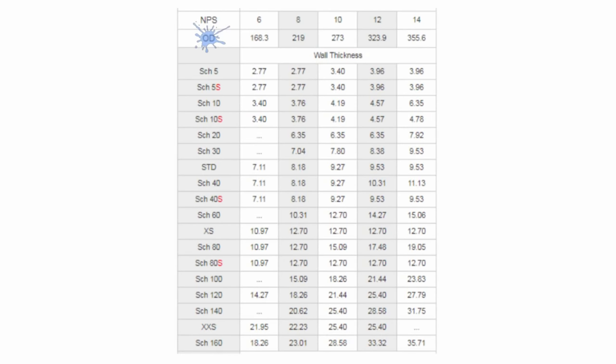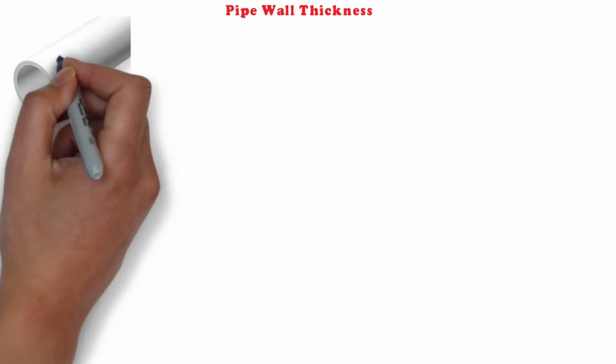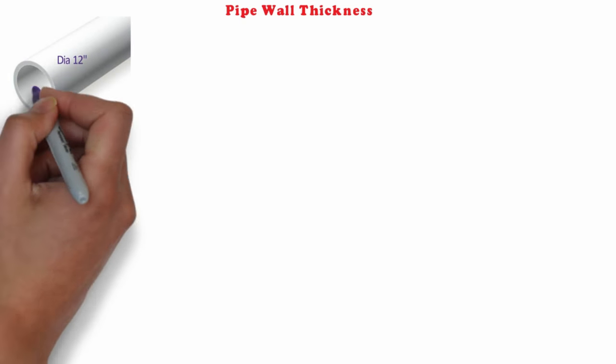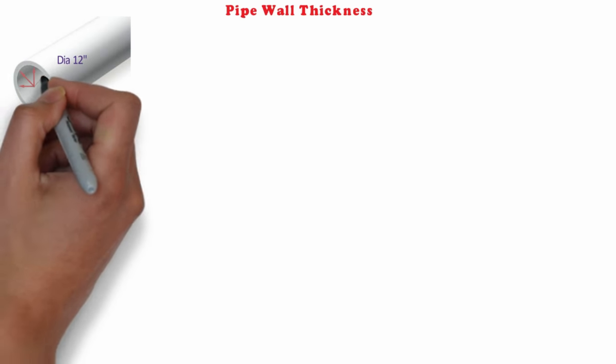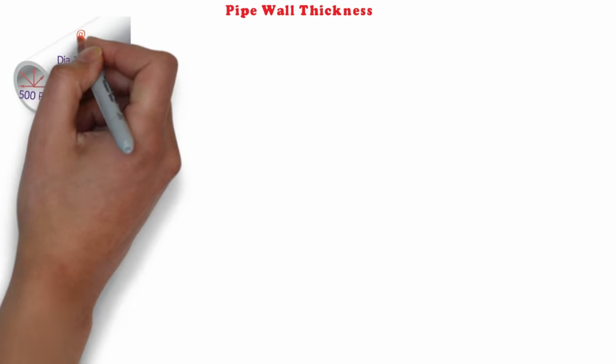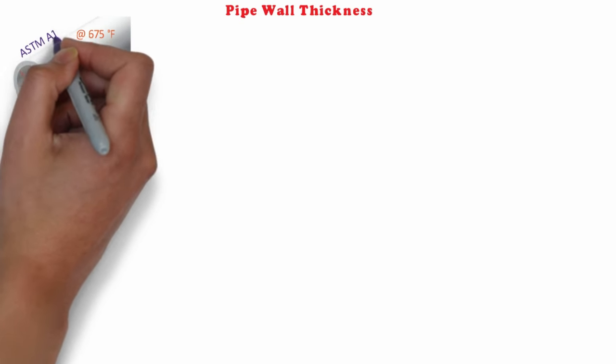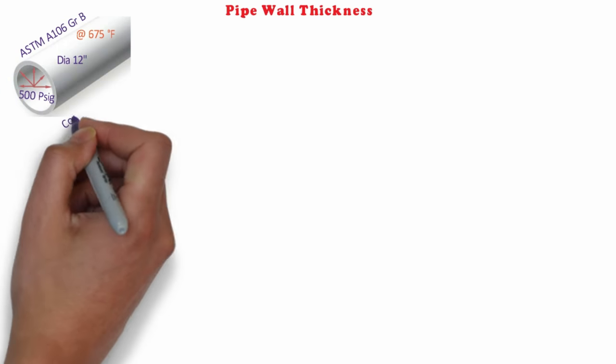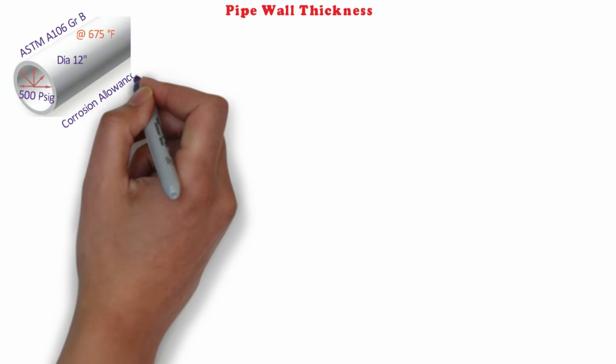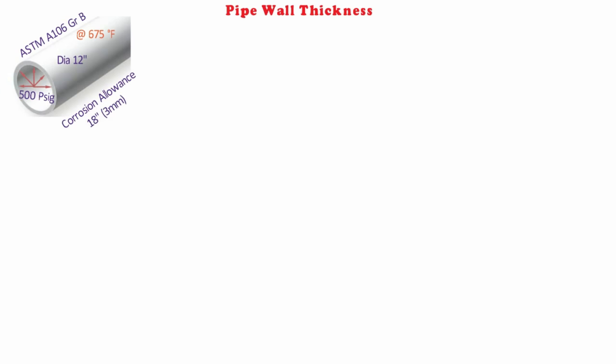Let's try to understand it better through an example. A 12 inch (300 mm NB) pipe has an internal maximum operating pressure of 500 psig and temperature of 675°F. The material of construction is seamless carbon steel to ASTM A106 Grade B. The recommended corrosion allowance is 1/8 inches (3 mm). Calculate the thickness of pipe as per ASME B31.3 and select the proper schedule.